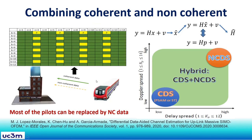We don't really have to choose between coherent and non-coherent — we can, in fact, combine them. Here there is an OFDM grid where we have K subcarriers and N time slots. We have placed pilots in the yellow resource elements, which gives the classical coherent scheme. But instead of pilots, we could place non-coherent data in those yellow positions. With this non-coherent data, since we can extract the data without estimating the channel, we can estimate x from the signal model, put it back into the received signal model — equivalent to a virtual pilot — and then estimate the channel. In this case, most of the pilots can be replaced by non-coherent data.